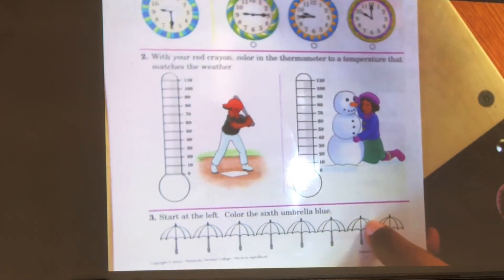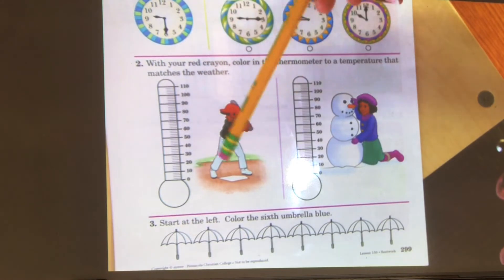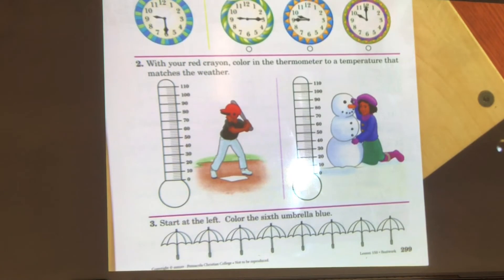Let's take a look at section two. With your red crayon, color the thermometer to the temperature that matches the weather. So here, you can come up with your own temperature. It doesn't tell you to find a temperature. But if you look at the picture, you see this boy right here. He's outside. He's playing baseball.